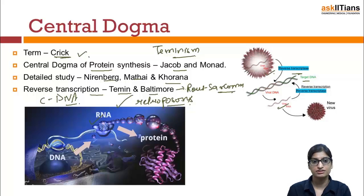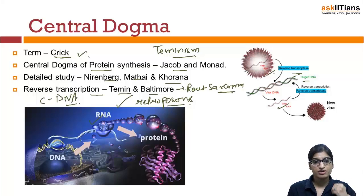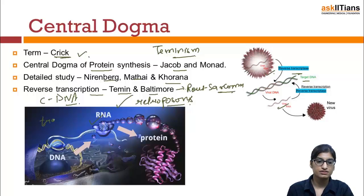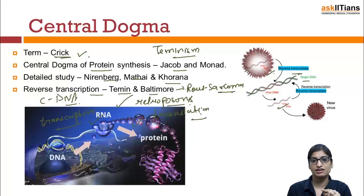That was a brief introduction to central dogma. We are going to learn how RNA is formed from DNA and how protein is formed from RNA. The process of formation of RNA from DNA is known as transcription, and the other process is translation. In this part we will learn about both transcription and translation in detail.